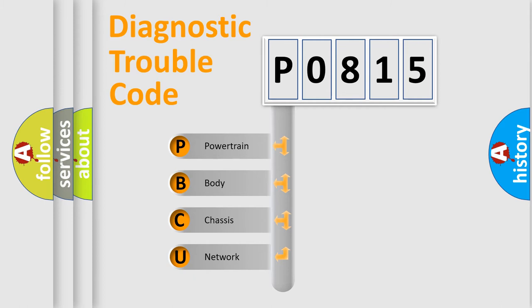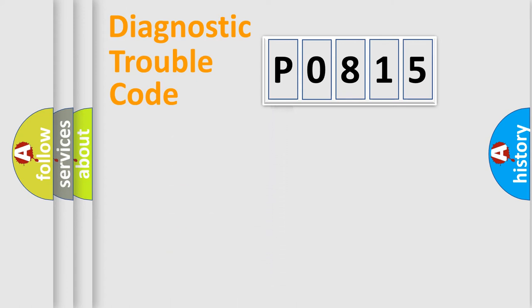We divide the electric system of automobile into four basic units: Powertrain, Body, Chassis, and Network. This distribution is defined in the first character code.